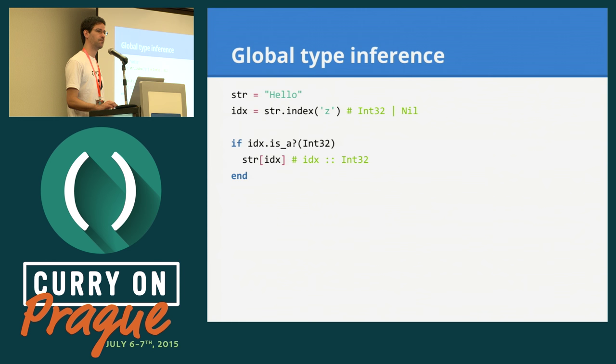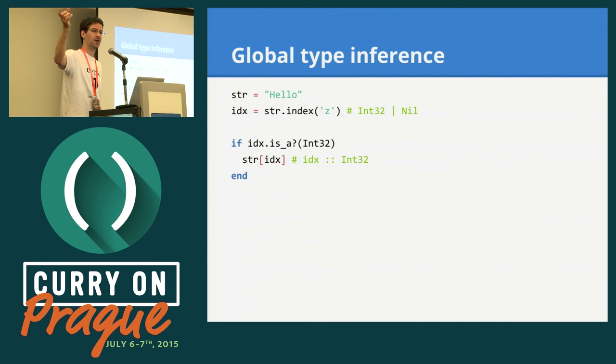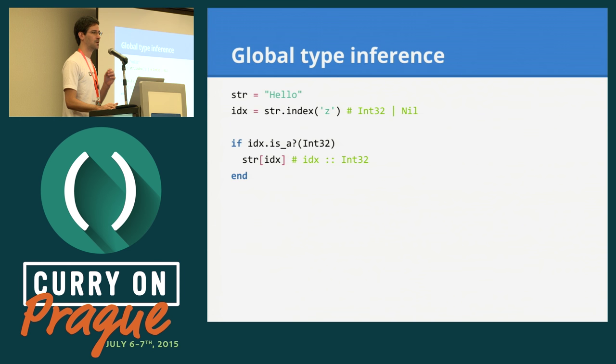Question about the union representation — is integer or nil a null pointer or a pointer to an allocated integer? In this case, it's the first union representation: a small struct with a type ID. If it's nil, the value doesn't matter. If it's an integer, it stores the integer — so it would be eight bytes for the type ID and the integer. We always try to take really good care of performance — no auto-boxing or anything like that.